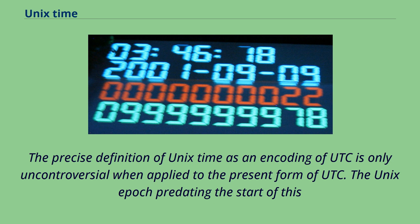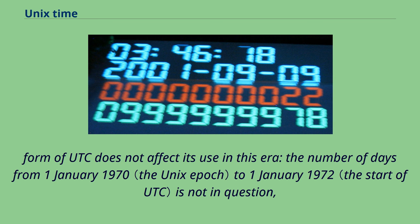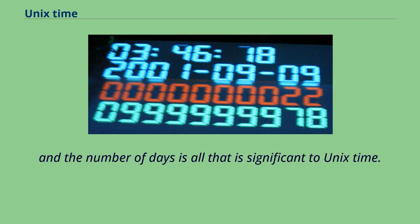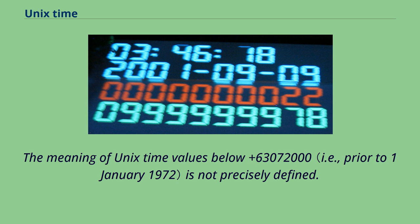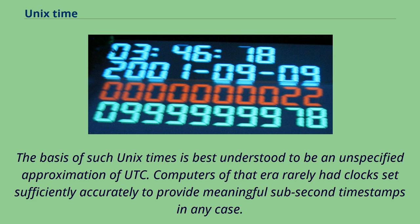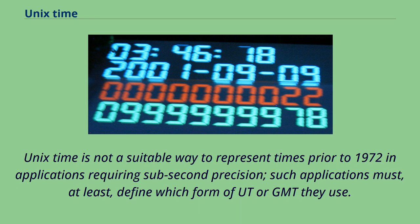The precise definition of Unix time as an encoding of UTC is only uncontroversial when applied to the present form of UTC. The Unix epoch predating the start of this form of UTC does not affect its use in this era — the number of days from January 1, 1970 to January 1, 1972 is not in question, and the number of days is all that is significant to Unix time. The meaning of Unix time values below +63,072,000 is not precisely defined. Unix time is not a suitable way to represent times prior to 1972 in applications requiring sub-second precision; such applications must define which form of UT or GMT they use.